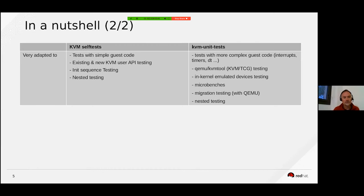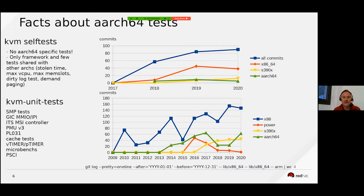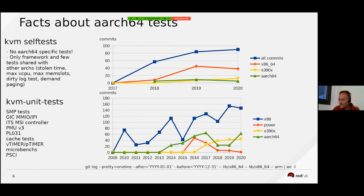Now let's have a look at some Git stats. The purpose is to emphasize the big difference between x86 commits in the different frameworks compared to the other architectures — and you can see that the number of commits related to ARM is very low.